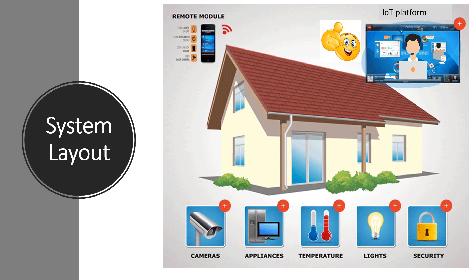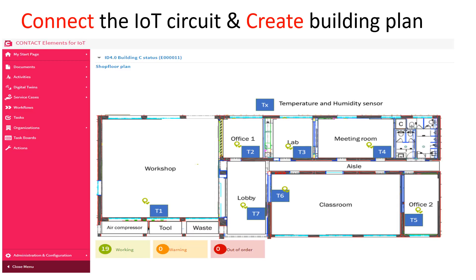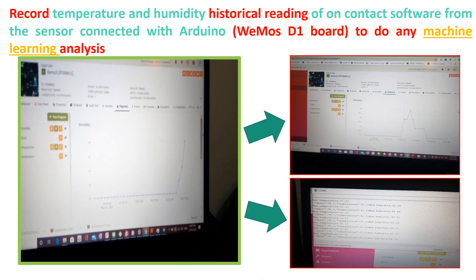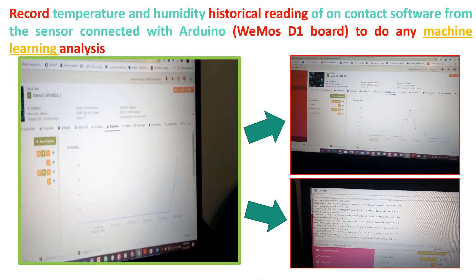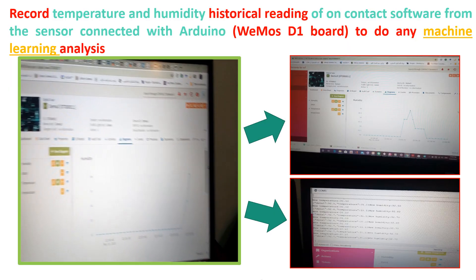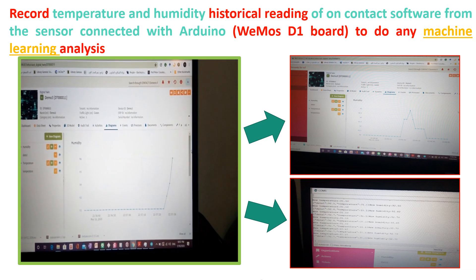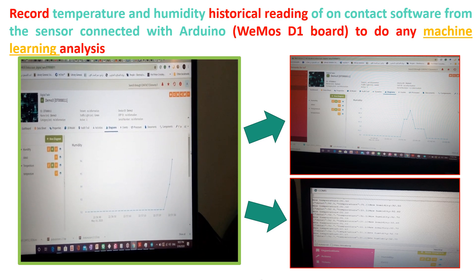We can use this circuit to read the temperature and humidity of each room in the building and create a dashboard on the contact software IoT platform. We can also record the historical readings of temperature and humidity on contact software from the sensor connected with the Arduino WeMOS D1 board.